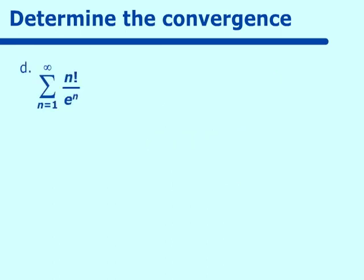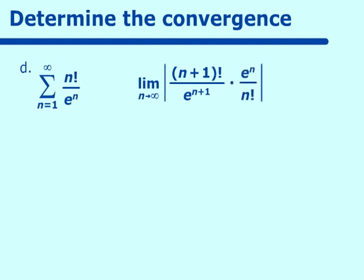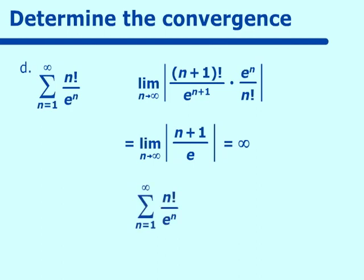Next: n! over eⁿ. Factorials grow faster than any other type of series we work with — even faster than an exponential — so this should diverge. The limit as n approaches infinity of (n+1)!/e^(n+1) times eⁿ/n! gives (n+1)! over n! which is n+1, times eⁿ/e^(n+1) which is 1/e. As n approaches infinity, n+1 over e approaches infinity, so the series diverges.